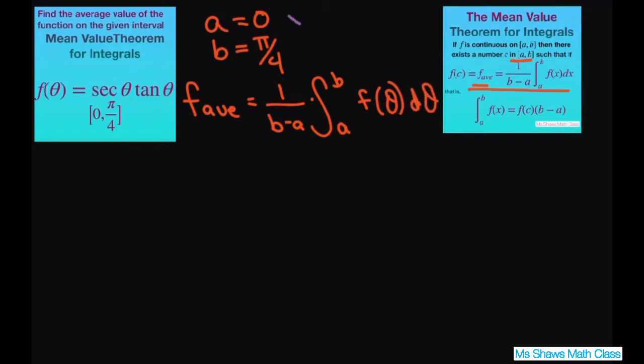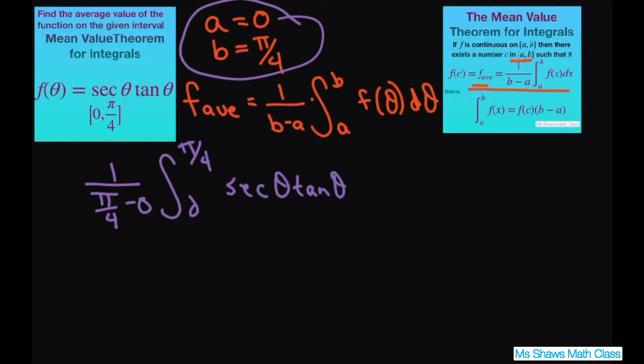So let's just fill in our a's and b's and work on this. So 1 divided by pi divided by 4 minus 0 times the integral from 0 to pi divided by 4 secant theta tan theta d theta.